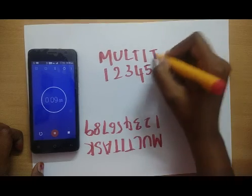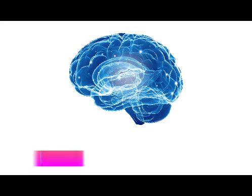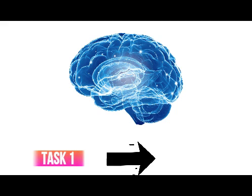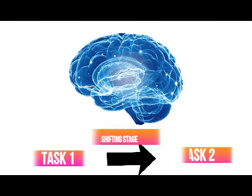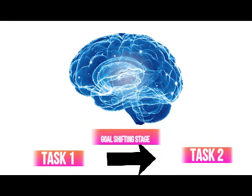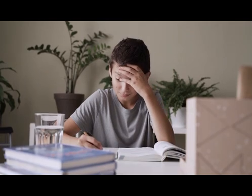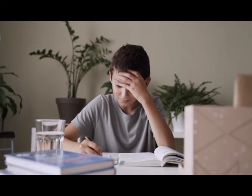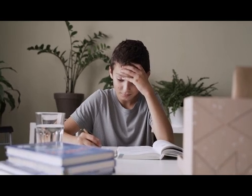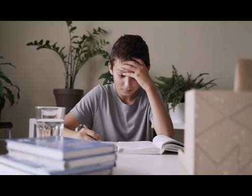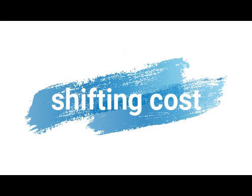The second time we receive one letter and one number, the rules activate for the first task. The second task is the goal-shifting stage. The first task's rules switch off, and the second task activates — that is why it is difficult. The time gap between tasks is the shifting cost.